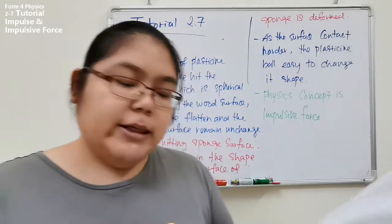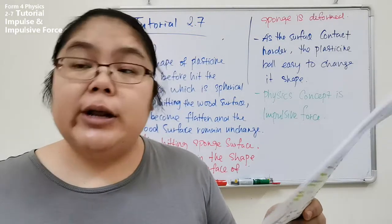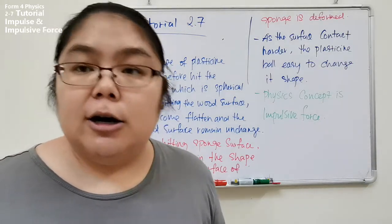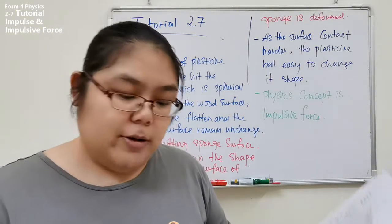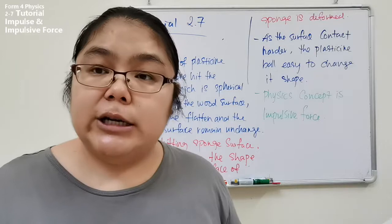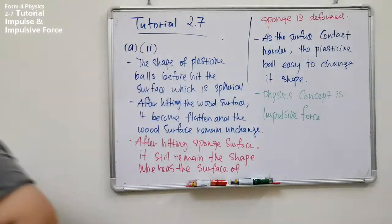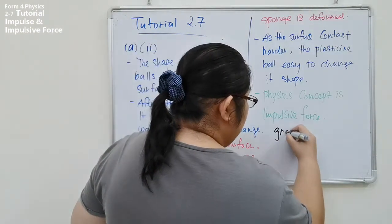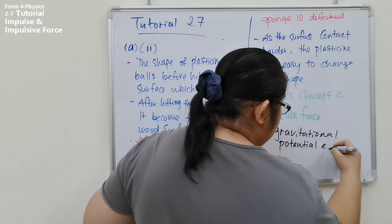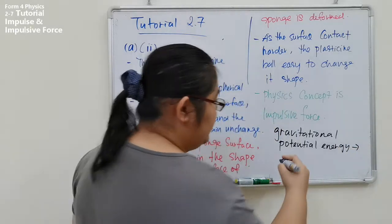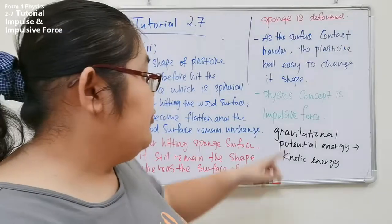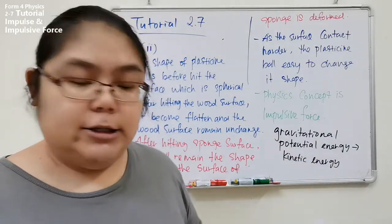Explain the changes in energy from the moment the plasticine ball is released until it reaches the position of the surface. There are two energies. Before it comes down, we have gravitational potential energy. When it comes down, that converts to kinetic energy. So gravitational potential energy converts to kinetic energy when the ball falls down.